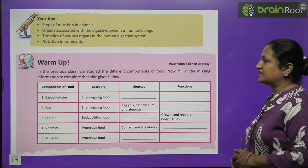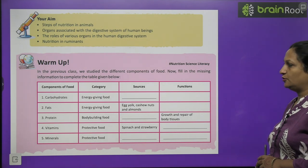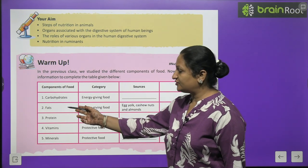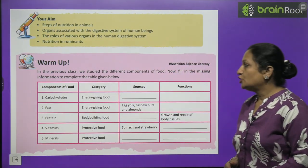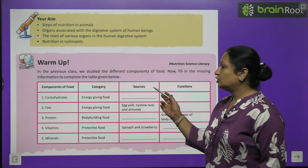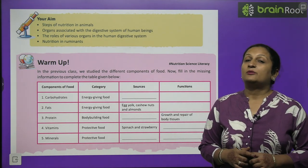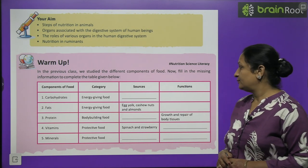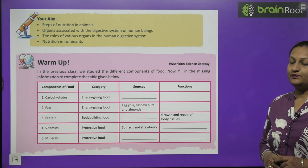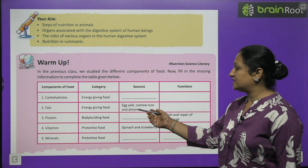In the previous class we studied the different components of food. Now fill in the missing information to complete the table. The components of food include carbohydrates, fats, proteins, vitamins and minerals. Carbohydrates are energy-giving food — sources include rice and wheat — and they provide energy to the body. Fats are also energy-giving food, obtained from eggs, cashew nuts and almonds.